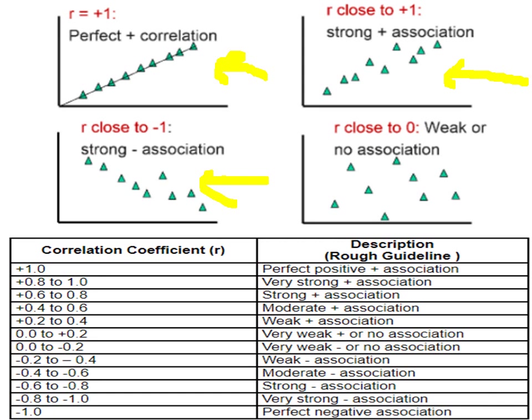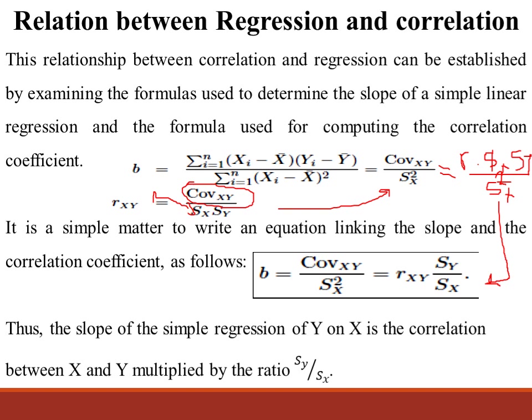As presented in this figure, when r, the correlation coefficient, equals positive 1, there is a perfect correlation, as represented by this figure. When r is strong, r will be close to positive 1, as mentioned in this figure. There is a relationship between correlation and regression, which can be established by examining the formulas used to determine the slope of a simple linear regression.